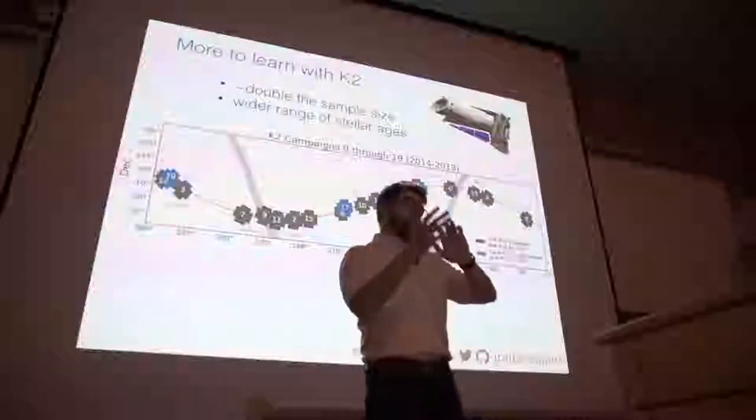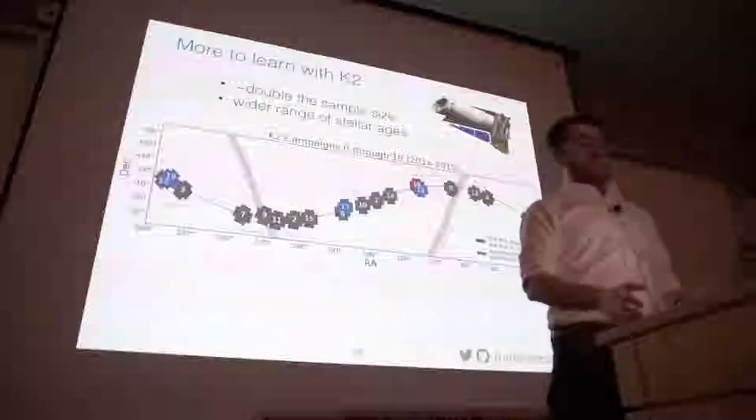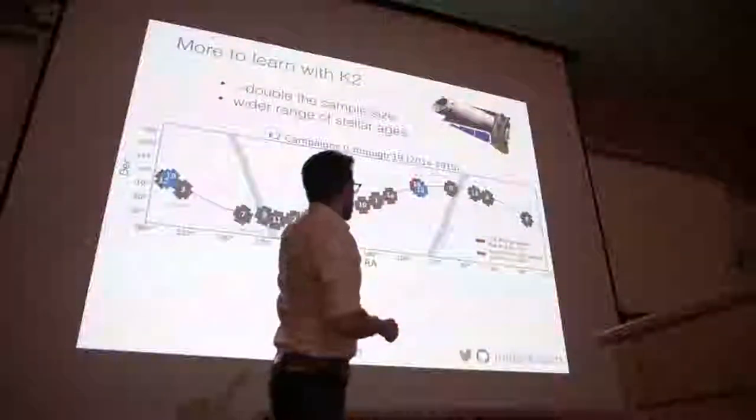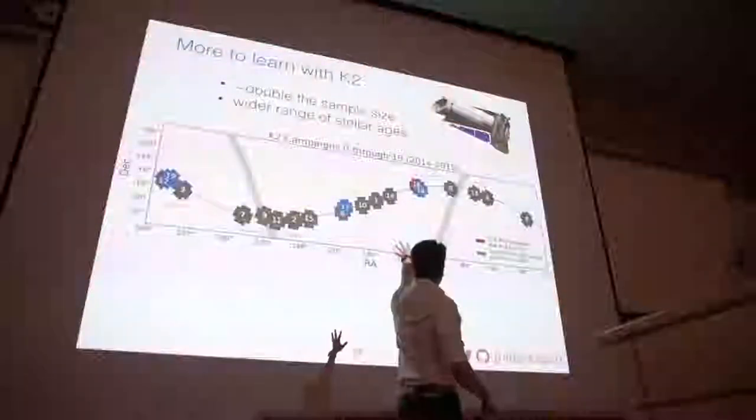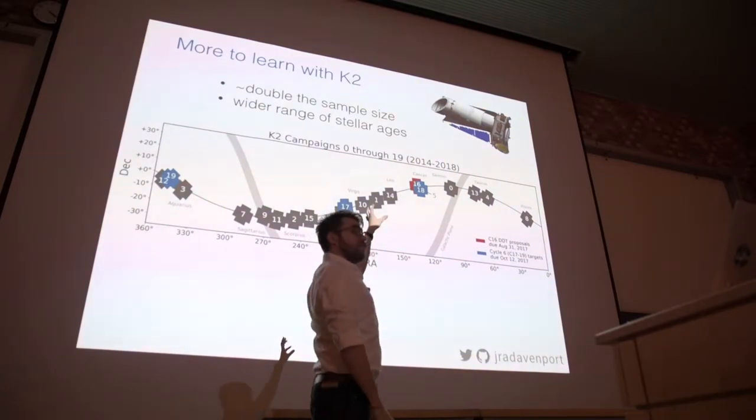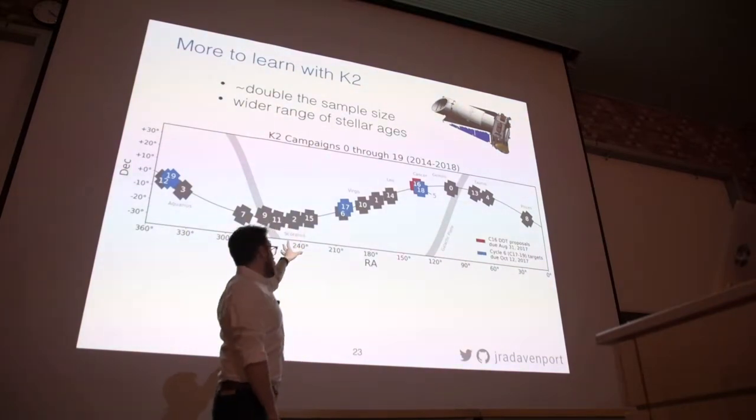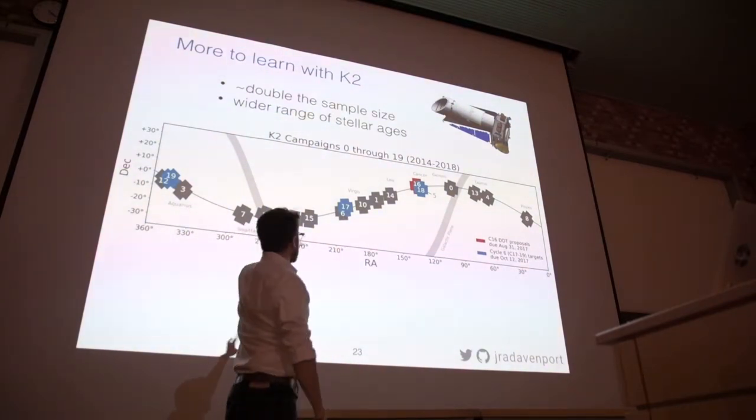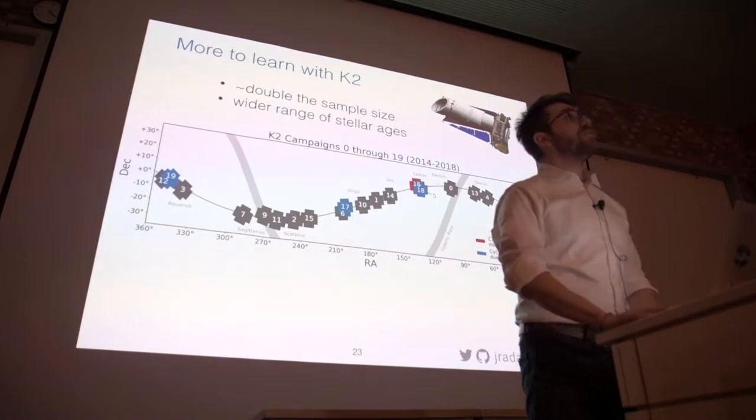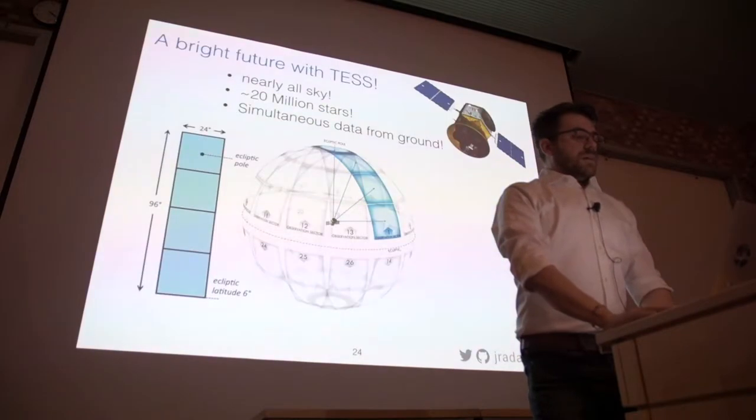That was just for the Kepler field. K2, the rebirth of Kepler, doubled the size. And so not only does it double the size, it goes through different parts of our galaxy. This is going to provide an independent test of the flare rate as a function of age when we look along different lines of sight of the galaxy.